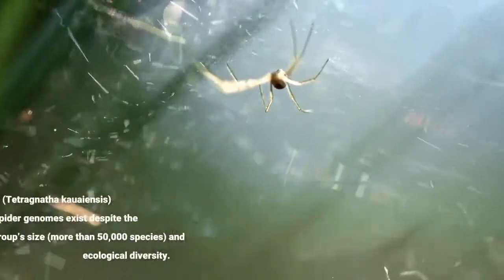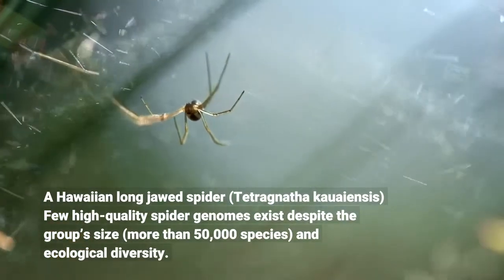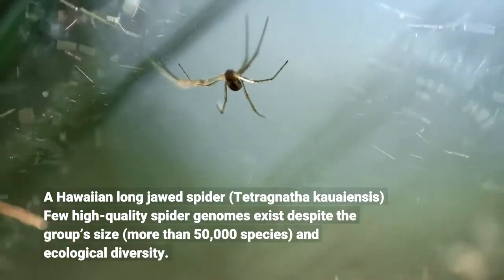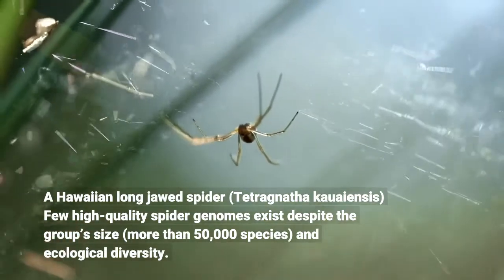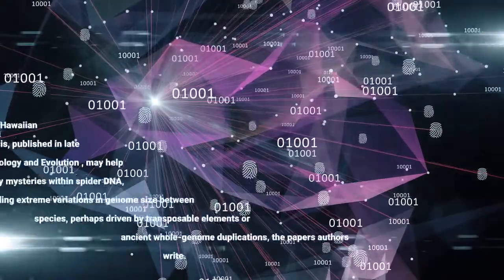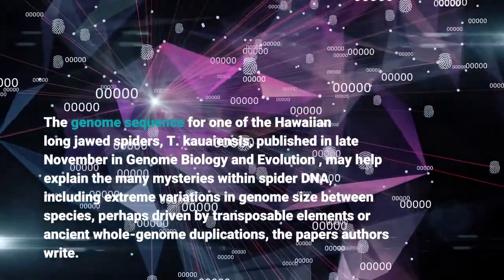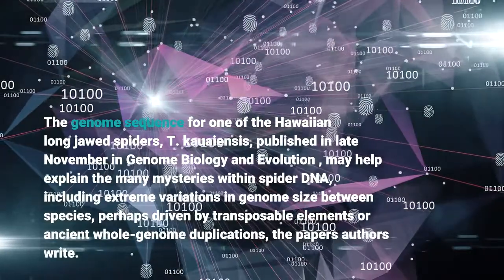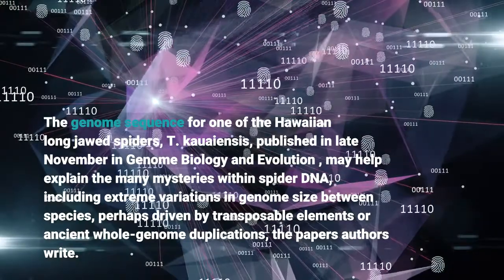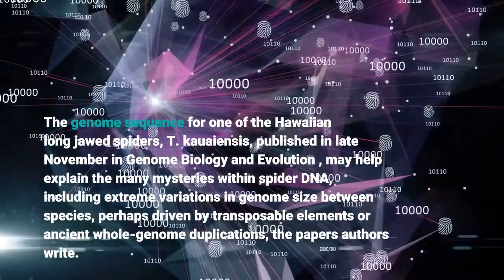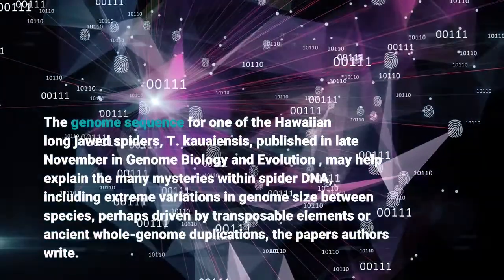A Hawaiian long-jawed spider, Tetragnatha cowainsis. Few high-quality spider genomes exist despite the group's size — more than 50,000 species — and ecological diversity. The genome sequence for one of the Hawaiian long-jawed spiders, T. cowainsis, published in late November in Genome Biology and Evolution, may help explain the many mysteries within spider DNA, including extreme variations in genome size between species, perhaps driven by transposable element arrays.